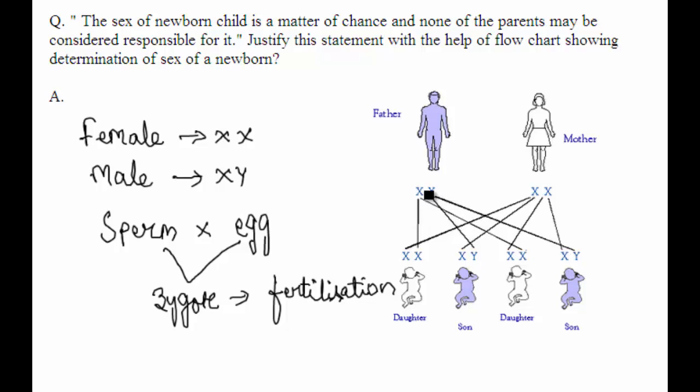You can see here in the flowchart. The X, Y, these are the two gametes that are produced by the father and X, X that is the same type of X gametes will be produced by mother. When X fuses with X of the mother, it produces daughter.